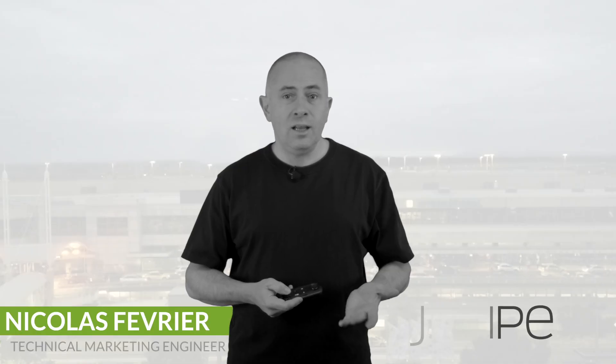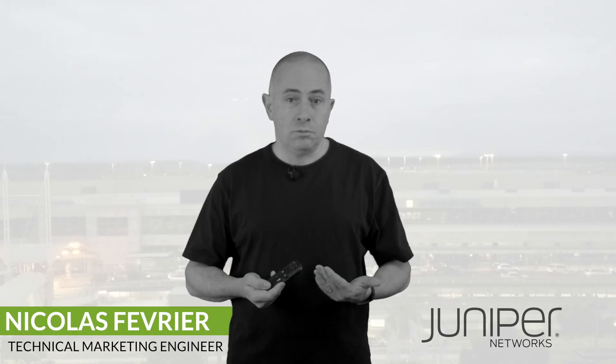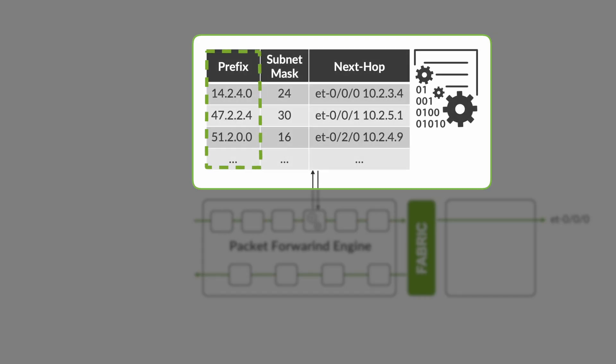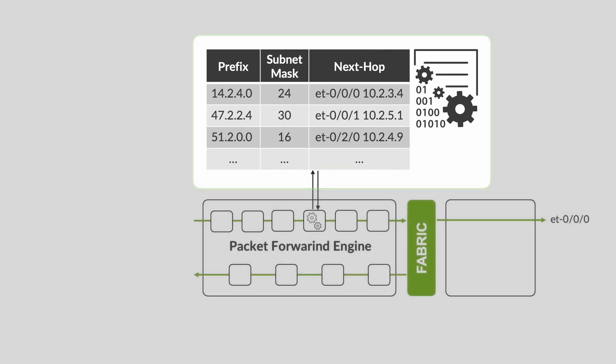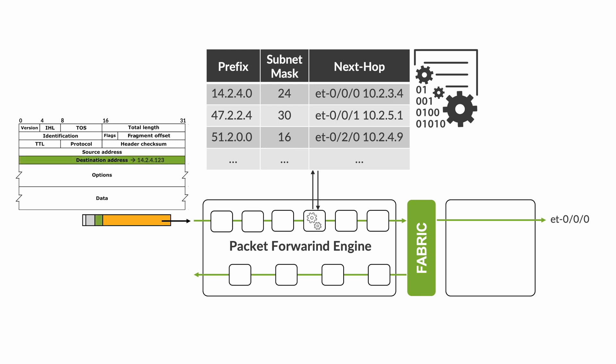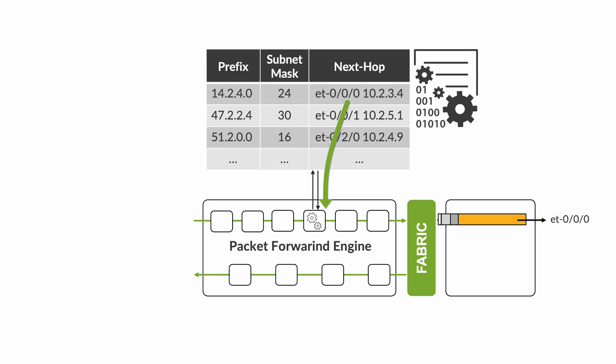The concept of FIB, or Forwarding Information Base, should be very familiar to most network engineers. In a nutshell, it's a table containing the routes — that means prefixes, subnet mask, and next-hop details required by the packet forwarding engine during the lookup phase. The PFE compares the destination address to the table entries and decides where the packet should be sent.